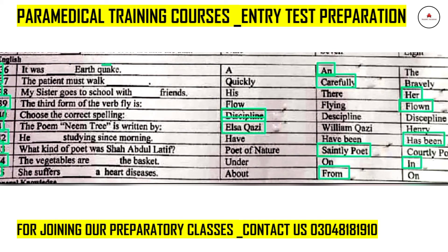Series MCQ number 42: 'He ___ studying since morning.' Here we need to check the tenses. With 'he,' we always use 'has been,' so the answer is: 'He has been studying since morning.' Next question: what kind of poet was Shah Abdul Latif? He was a Sufi and courtly poet, so option B is correct.